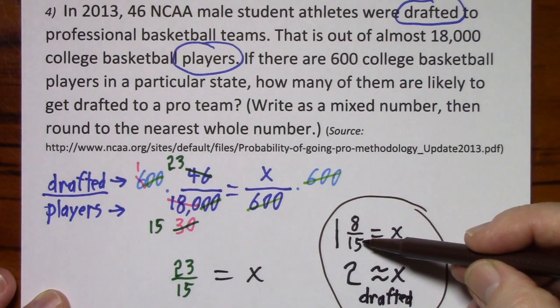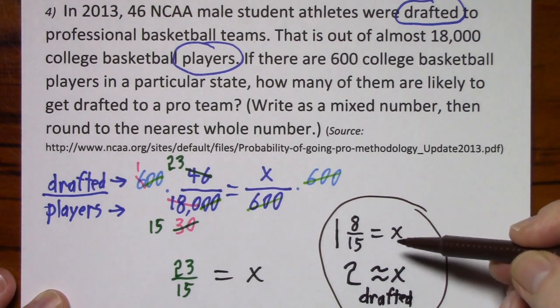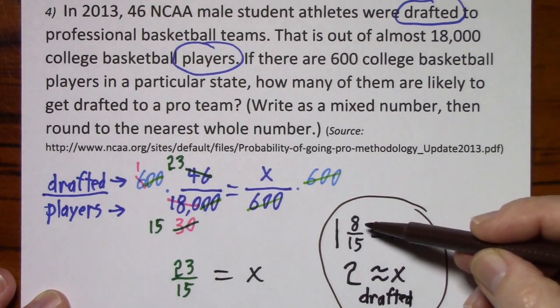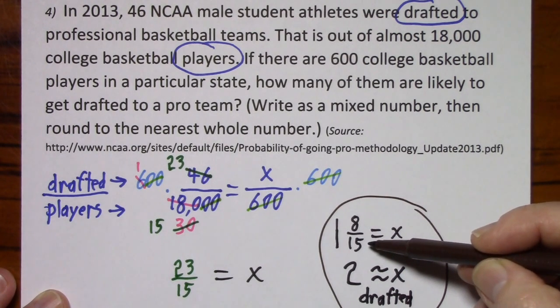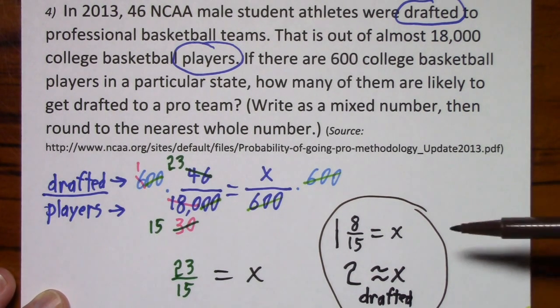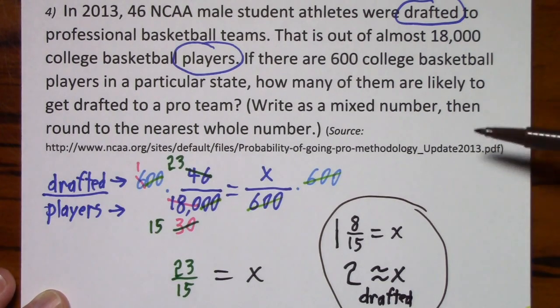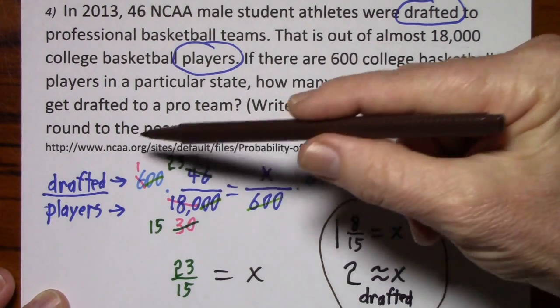If this was seven fifteenths I would have had to round it down to one, because seven fifteenths is a little bit less than half. By the way these are true statistics from the NCAA.